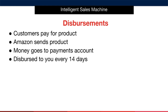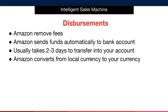Every time a customer places an order on the Amazon platform for your product, they will obviously make a payment. After payment is complete and the products have been dispatched to the customer, Amazon places the money into your payments account. This is then collated and disbursements are sent to you every 14 days.